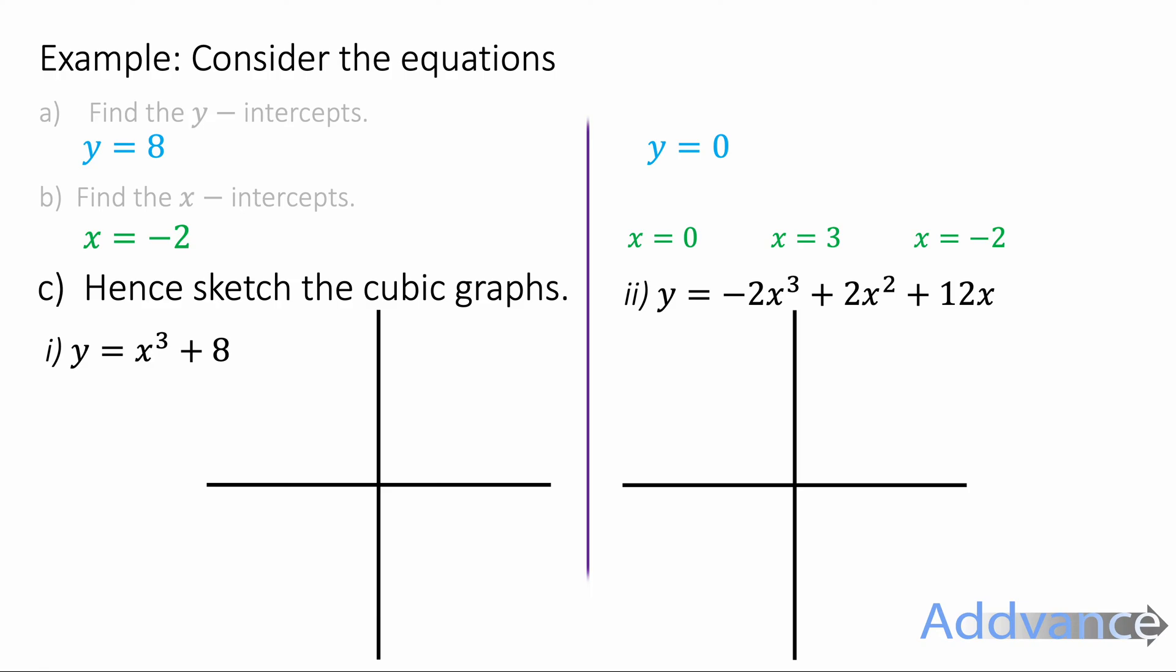So for the first one, y = x³ + 8. And we're going to plot the y-intercept. The y-intercept is 0 across, 8 up. And the x-intercept is -2 across, 0 up. We've got those plotted there. And now all we need to do is draw a cubic curve. The a is more than zero, so it's going to be going from bottom left to top right. And it's going to look like this. That's what a cubic looks like.